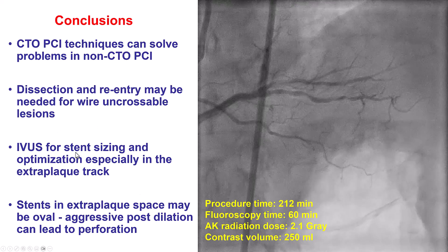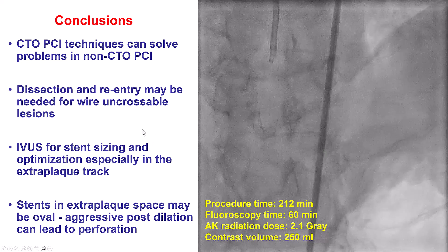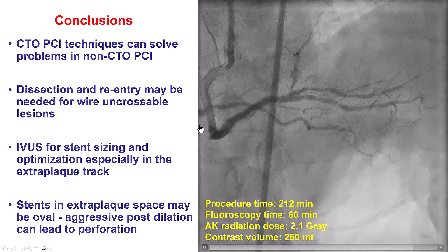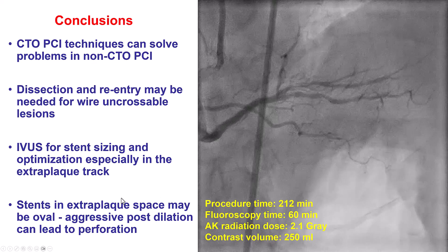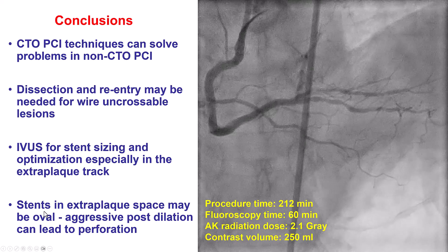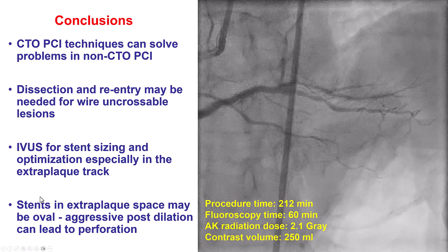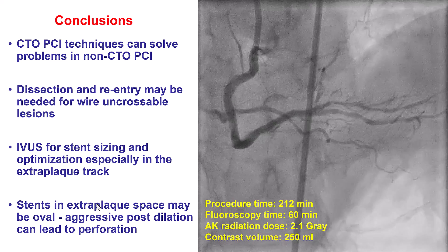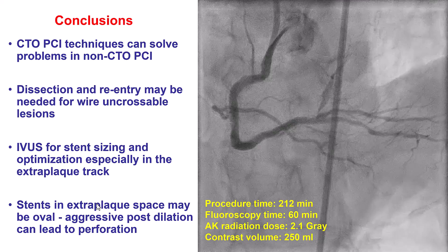For cases like this, IVUS is critical — as it is for every complex PCI — to ensure a good stent area is achieved. In cases with heavy calcium, when stenting into the extraplural space, the goal is not to make the artery perfectly round. An oval shape is perfectly acceptable, because one can only expand in one direction with heavy calcification. If we are too persistent with high-pressure balloon inflations, we risk coronary perforation.